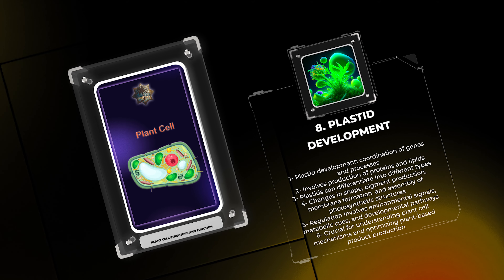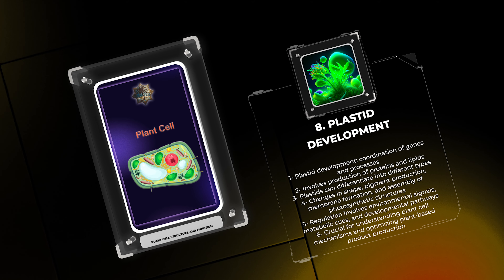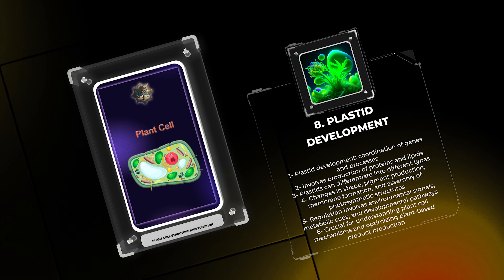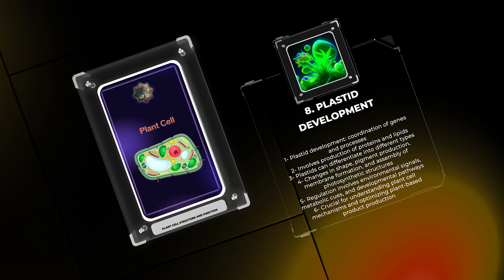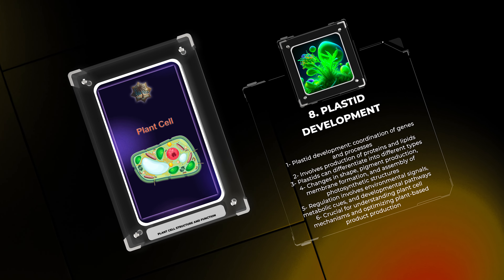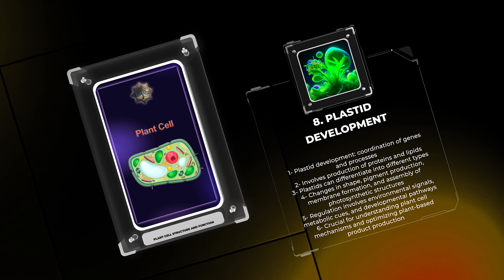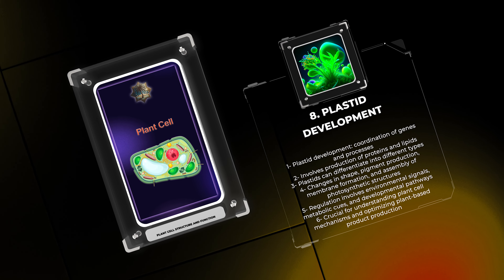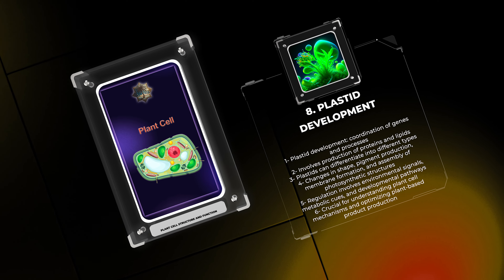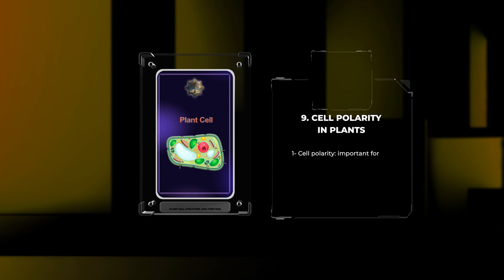Plastids are vital organelles with various functions, such as photosynthesis and storage. Their development involves the coordination of genes and processes that lead to the production of proteins and lipids. Plastids can differentiate into different types depending on their role in the cell. This development includes changes in shape, pigment production, membrane formation, and the assembly of photosynthetic structures. The regulation of plastid development is complex, involving environmental signals, metabolic cues, and developmental pathways.